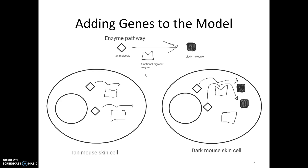We'll be continuing to work with these cellular models where we've been drawing different proteins or enzymes inside of a cell, or maybe receptor proteins on the outside of the cell, with the idea that the type of proteins you have in your cells determines traits. In this case, this was for the rock pocket mouse. If a mouse has non-functional enzymes, the tan molecule stays tan. If it has any functional enzyme, the tan molecule can be converted into a black molecule.